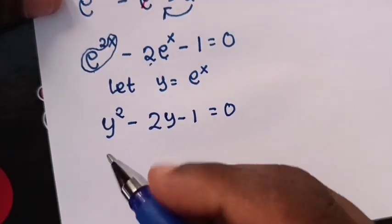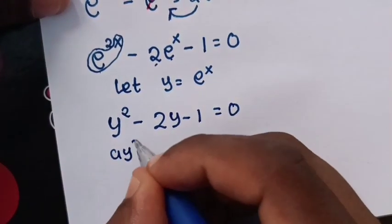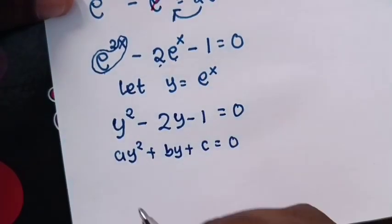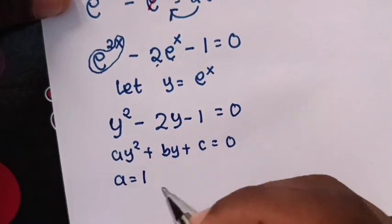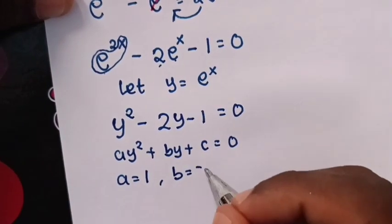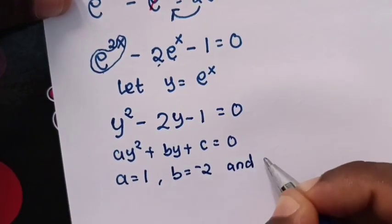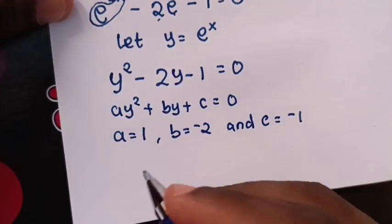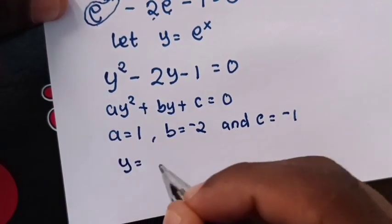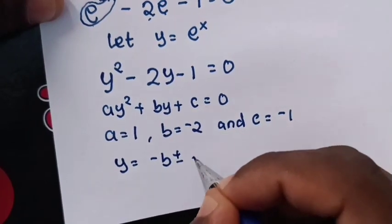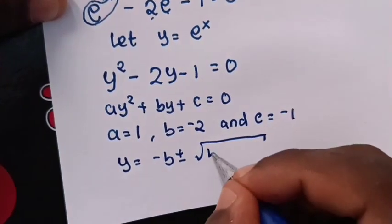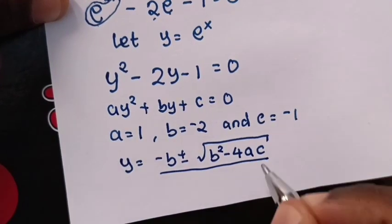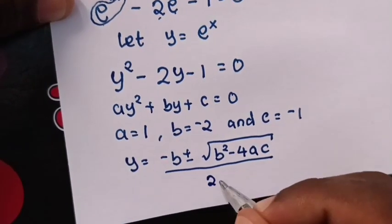This is a quadratic equation in the form ay squared plus by plus c equals 0, where a equals 1, b equals negative 2, and c equals negative 1. From the quadratic formula, y equals negative b plus or minus square root of b squared minus 4ac, all over 2a.